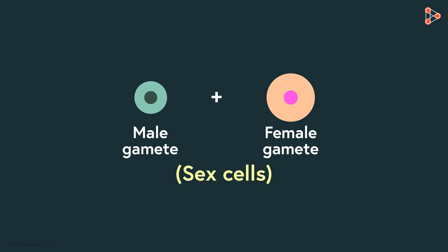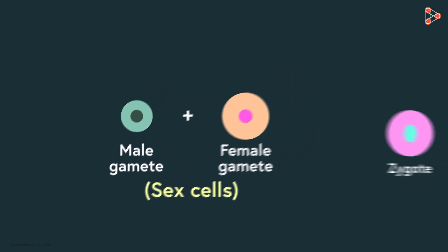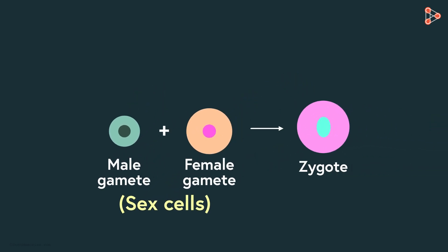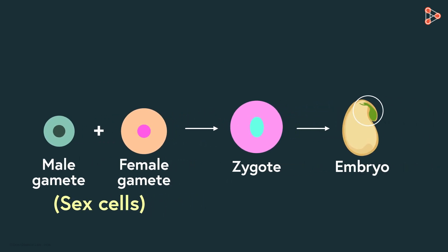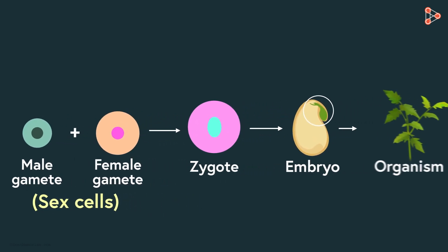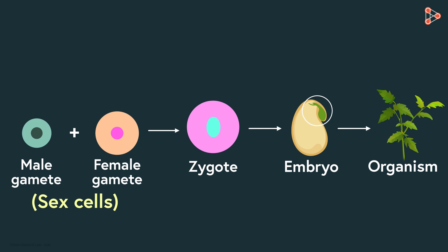Fusion of the two gametes — one from a male and the other from a female — will give rise to a zygote, which will further develop into an embryo. This embryo grows and develops into a baby organism.